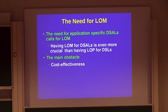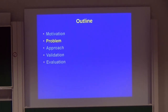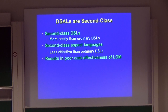Therefore, we need to create DSALs on-demand for our application, and this is exactly what LOM is designed for. In a sense, LOM is even more important for DSALs than LOP is for DSLs. But the main problem is the cost-effectiveness of LOM. The root cause is that DSALs seem to be second class — they are second-class DSLs, making them more costly to implement than ordinary non-aspect-oriented DSLs, and they are second-class aspect languages, making them less effective to program with than ordinary aspect languages.